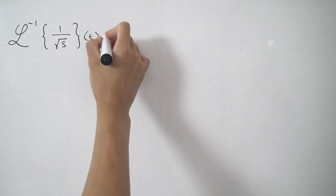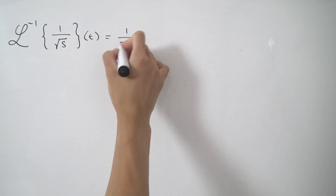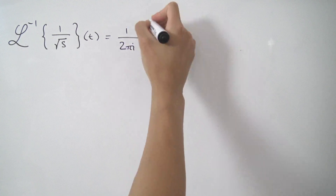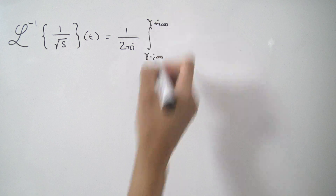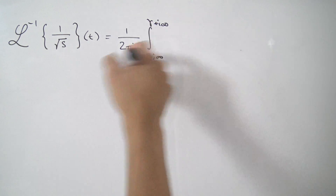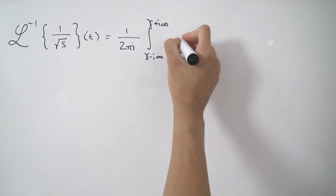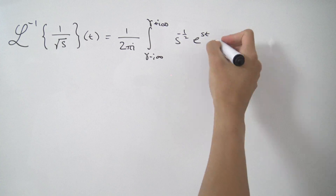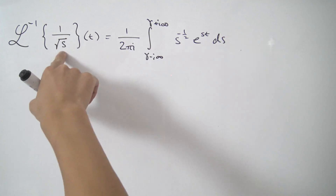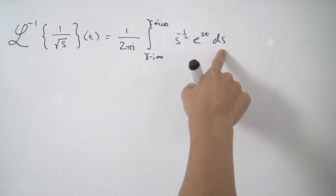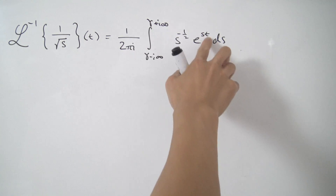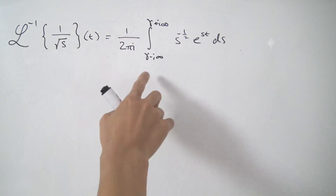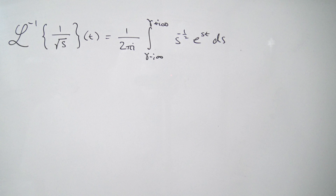How is the inverse Laplace transform defined? It's equal to 1 over 2πi, then we have the integral running from γ minus i∞ to γ plus i∞, where γ is some real number. Then we take our function — in this case s to the minus one half — multiply by e to the st, and integrate with respect to s. In this way all our s's are gone after we integrate and we're just left with a function of t, which is exactly what we want.